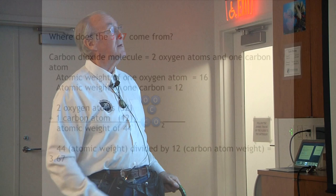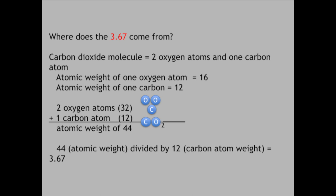To convert elemental carbon mass to the CO2 that had to be pulled from the atmosphere, we multiply the pure carbon mass by 3.67. Where does 3.67 come from? We look at a CO2 molecule: two oxygen atoms and one carbon atom. Oxygen atomic weight is 16, carbon is 12. Two oxygens equal 32, plus one carbon at 12 gives CO2 a molecular weight of 44. The carbon alone is 12. So 44 divided by 12 equals 3.67. That number you can take to the bank — it's straight chemistry.